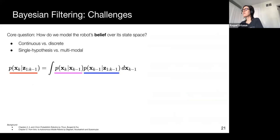Proper Bayesian filtering results in an integral over the state space at the previous time step that is oftentimes intractable. So there are a number of common approximations used to tackle the problem in practice.